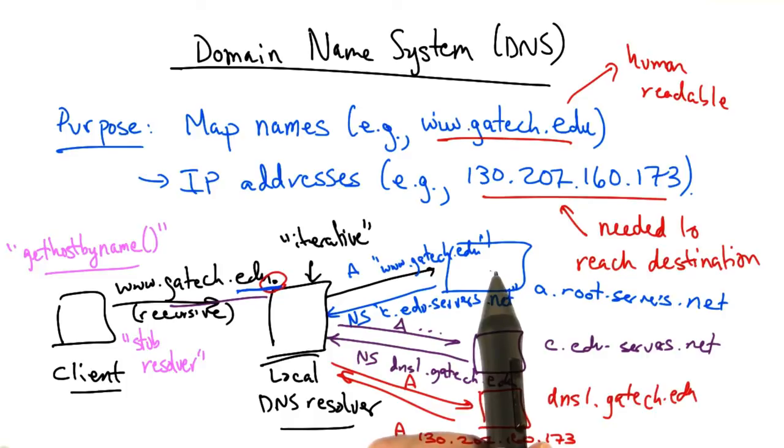The blue server is authoritative for the root, the purple server is authoritative for .edu, and the red server is authoritative for gatech.edu.